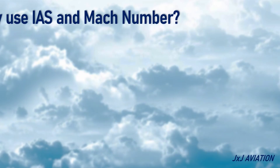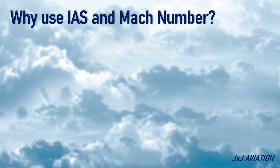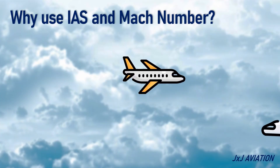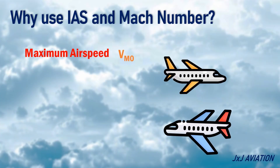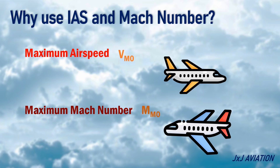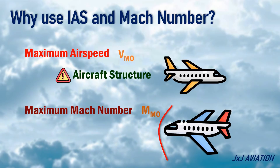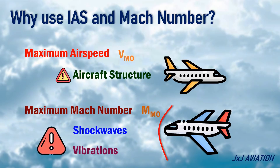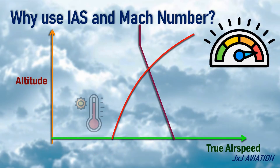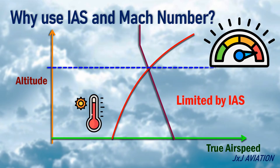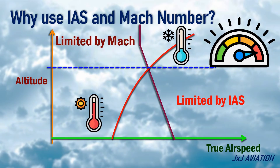Why do we use both indicated airspeed and Mach number? Aircraft are limited by the maximum airspeed and maximum Mach number. The maximum indicated airspeed is to protect the aircraft's structural components. The maximum Mach number prevents the formation of shock waves and aircraft vibrations. At lower altitudes, the temperature is high, so the aircraft is limited by the indicated airspeed. At higher altitudes, the temperature is low and the Mach number increases, so the aircraft will be limited by Mach number.